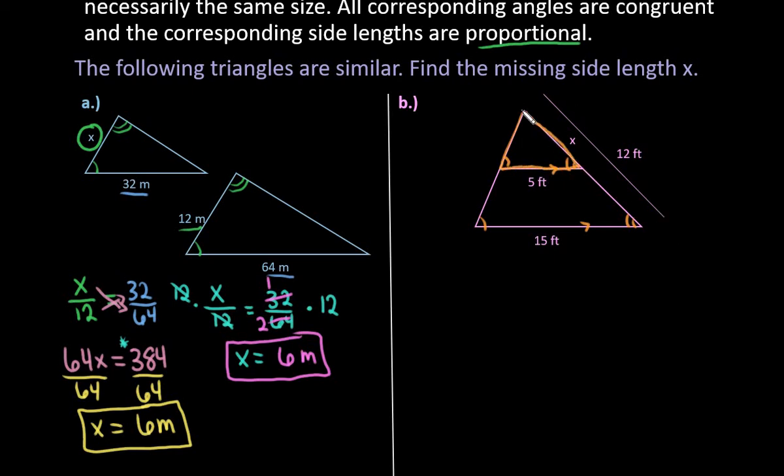So 12 represents this entire side length over here. So I could set this up the same way I did on the last one, where I can see that x corresponds to the 12, as 5 corresponds to the 15.